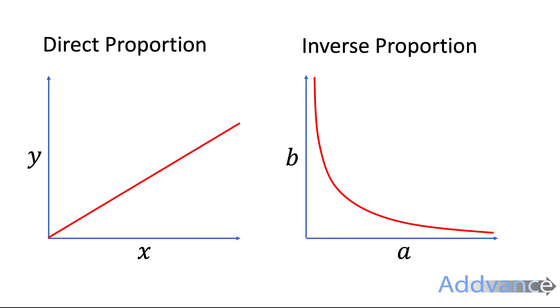And the equations for this look something like this. Well, y is proportional to x and that's what this fish symbol means, it means proportional. Whereas for inverse proportion, b is proportional to 1 over a. It can use any letters to describe this, it doesn't have to be y's or x's or a's and b's.